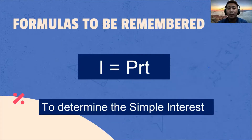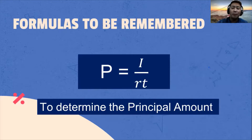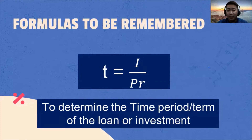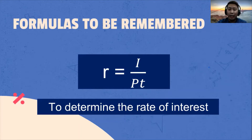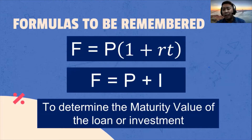These are the formulas to be remembered. To determine simple interest: I is equal to principal amount multiplied by rate multiplied by time. To determine the principal amount: P is equal to interest over the product of rate and time. To determine the rate: R is equal to interest over the product of the principal amount and time. To determine the maturity value: F is equal to the principal amount multiplied by the quantity of 1 plus the product of rate times time. Or maturity value is equal to the principal amount plus the interest.